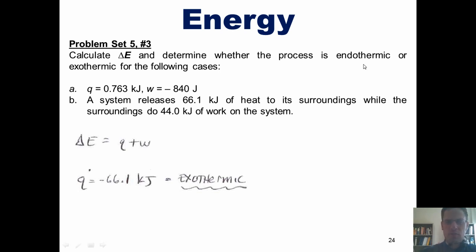Now, it tells us further that the surroundings do 44 kilojoules of work on the system. So, does that mean W is positive or negative? Well, we imagine the surroundings depositing 44 kilojoules of work into the system's energy bank account. That is a deposit. Thus, it is positive. We have our values for Q and W. We now throw them into the equation and determine that the final answer is negative 22.1 kilojoules.